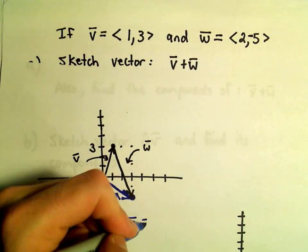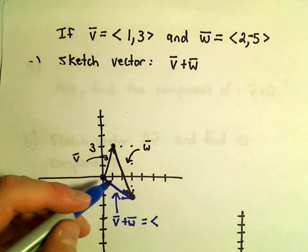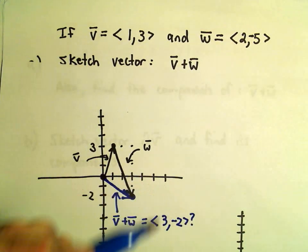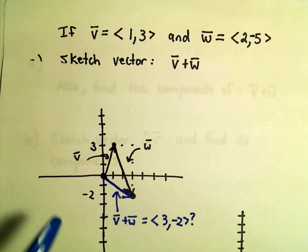So to me, I'm thinking, well, just based on the graph, shouldn't the components be 3 comma negative 2, according to our little diagram?